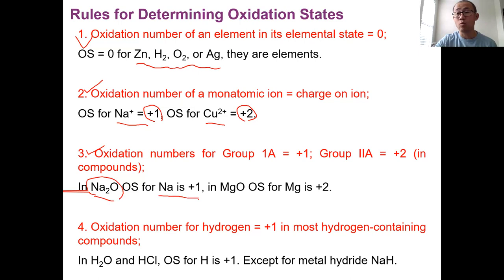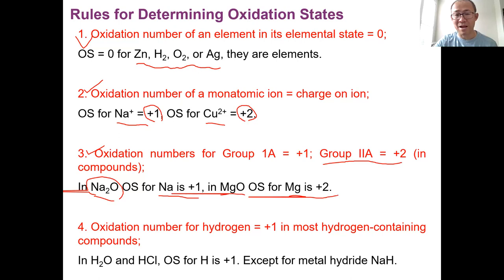Similarly, the oxidation number for a Group 2A metal — alkaline earth metals — is +2 in a compound. For example, in magnesium oxide, the oxidation number for magnesium is +2, because magnesium is a Group 2 element. Group 2A includes beryllium, magnesium, calcium, and these elements all have oxidation number +2 in compounds — which is the group number.